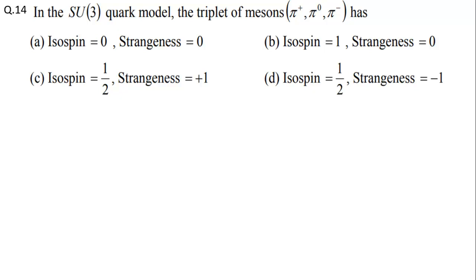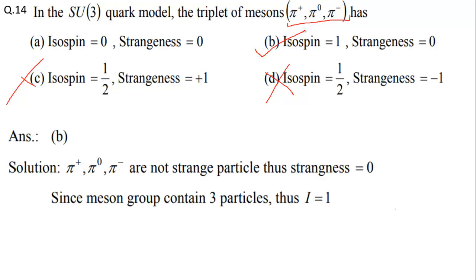Question 14: In the SU(3) quark model, the triplet of mesons π+, π0, π− has — I mentioned that Pi mesons are non-strange particles, so options C and D with strangeness can be discarded. The multiplicity of this triplet is 3, with values +1, 0, −1, which means the isospin must be 1. So the correct answer for question 14 is option B: isospin = 1.